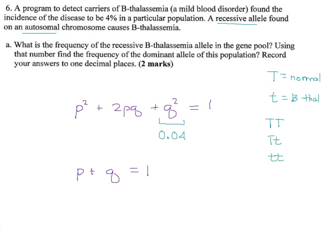So that's our Q squared. And what do they want? Find the frequency of the dominant allele.